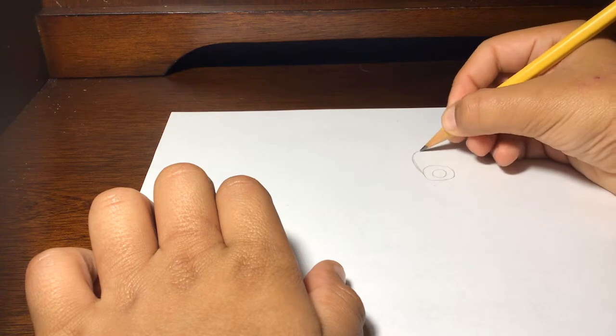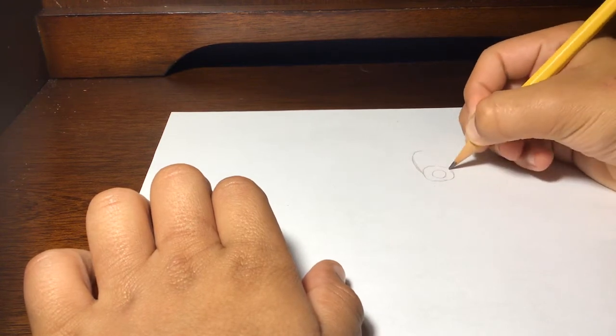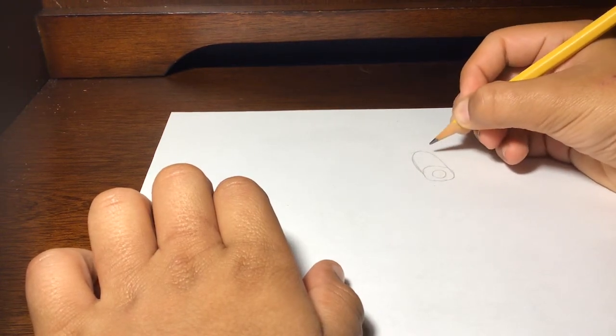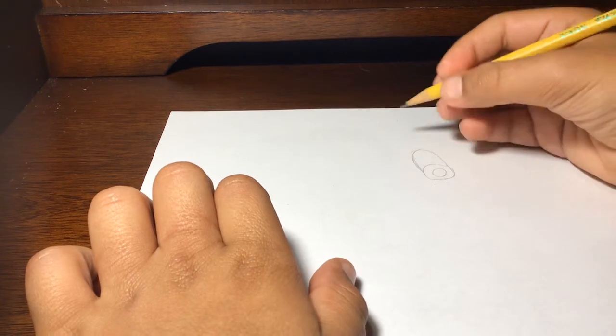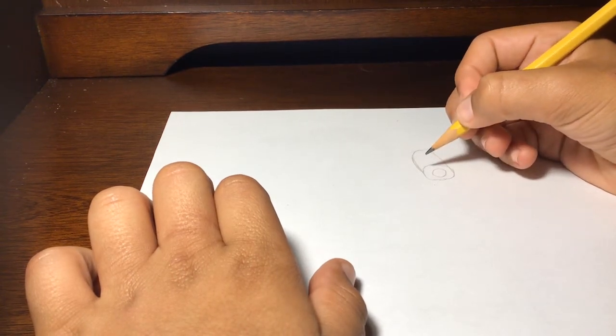And then after we do that we're going to draw the ears. And now this is sort of going to make it look like a dog. So then have them come down.